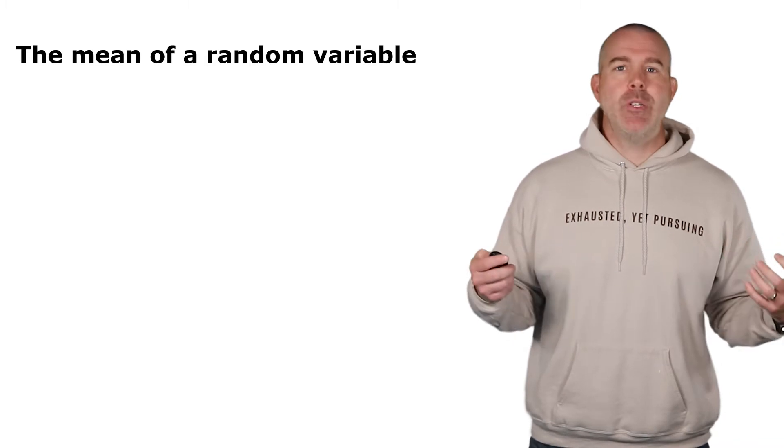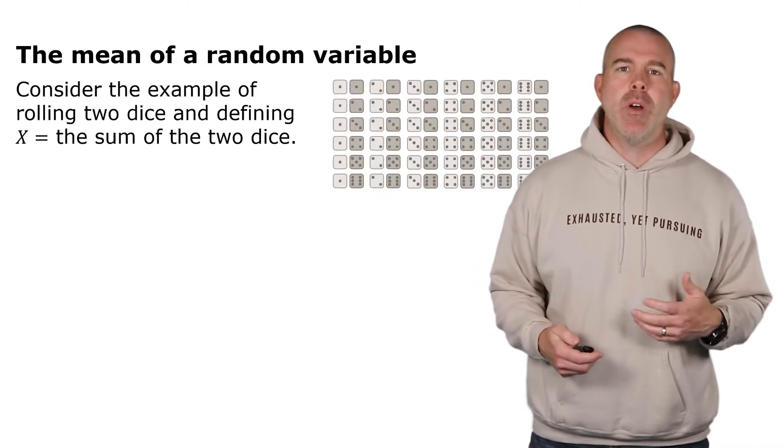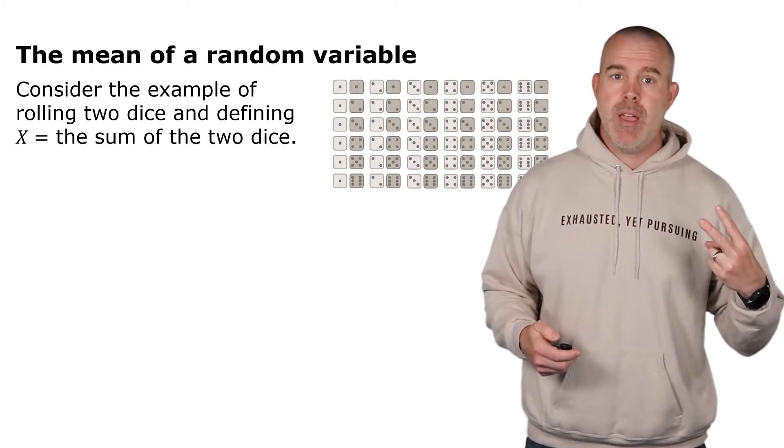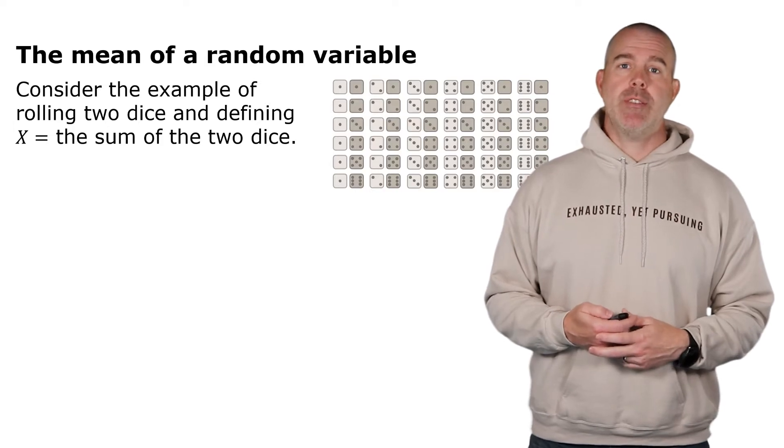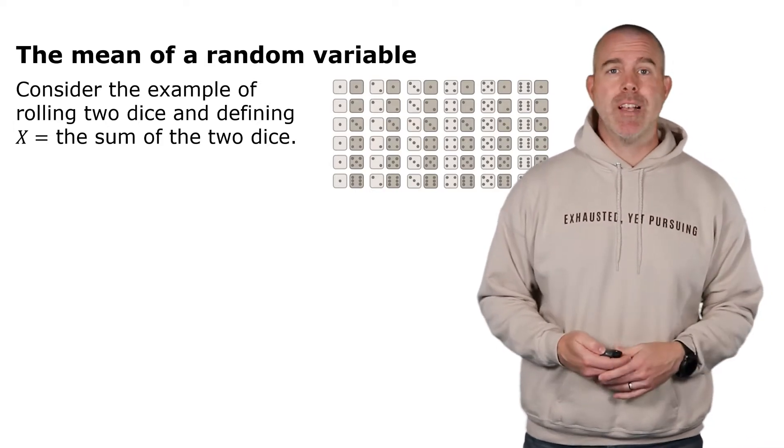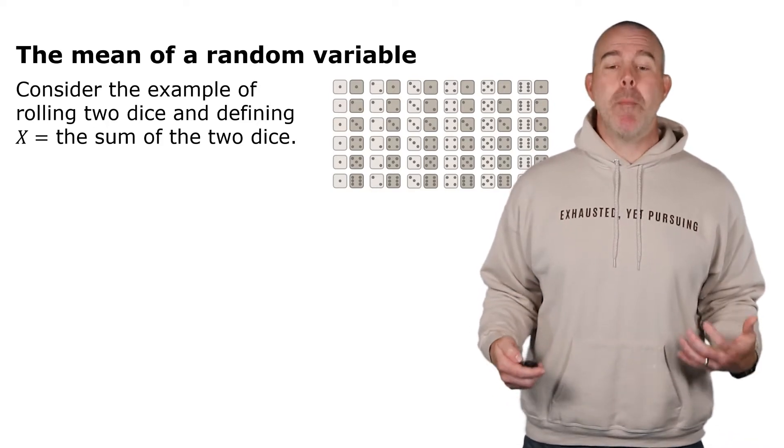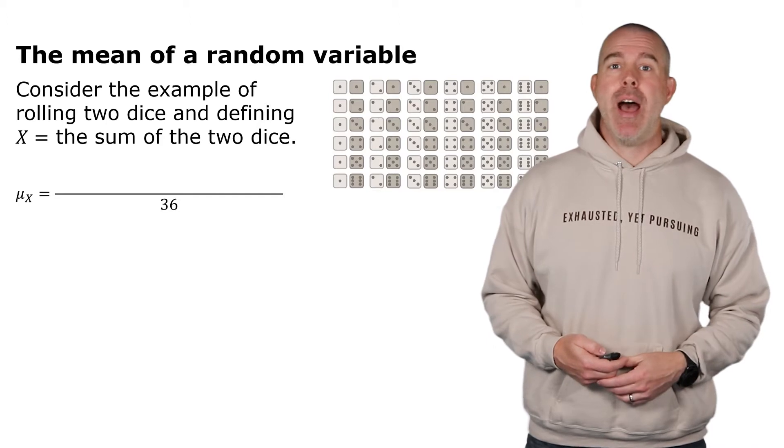Let's do the same thing. Let's do an example to introduce this. So now instead of flipping the coins, let's say we roll two dice and we define our random variable x to be the sum of the two dice. Well, as you can see, there are 36 total possible outcomes. So if we want to compute the mean, that's going to be adding up all of these totals and divide by 36.